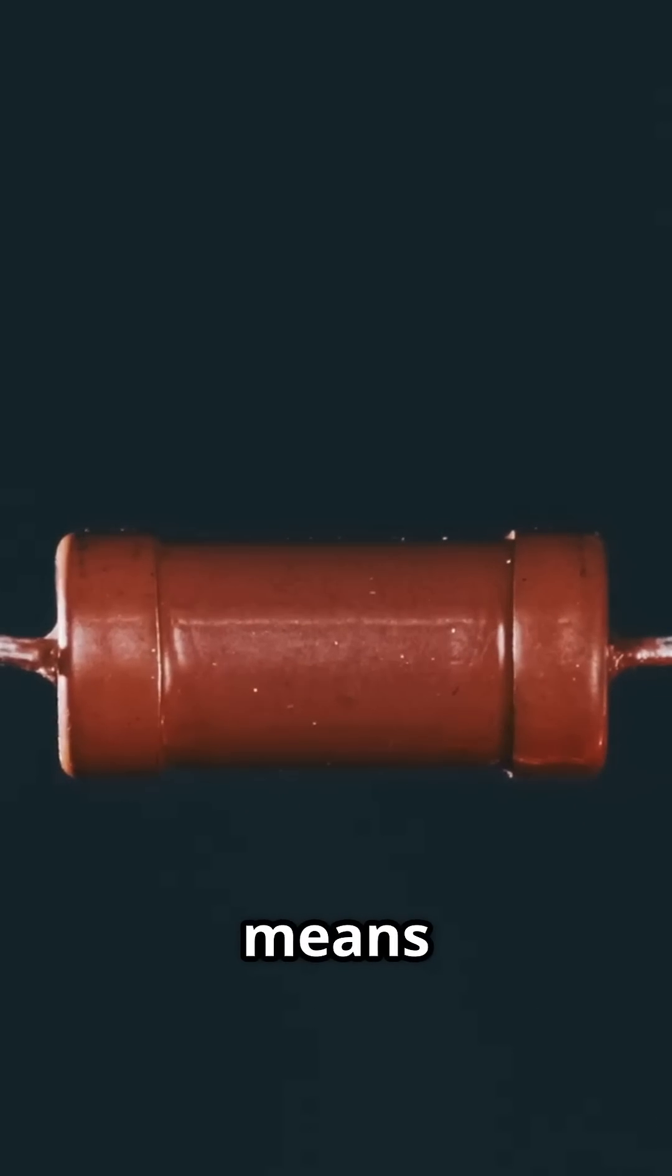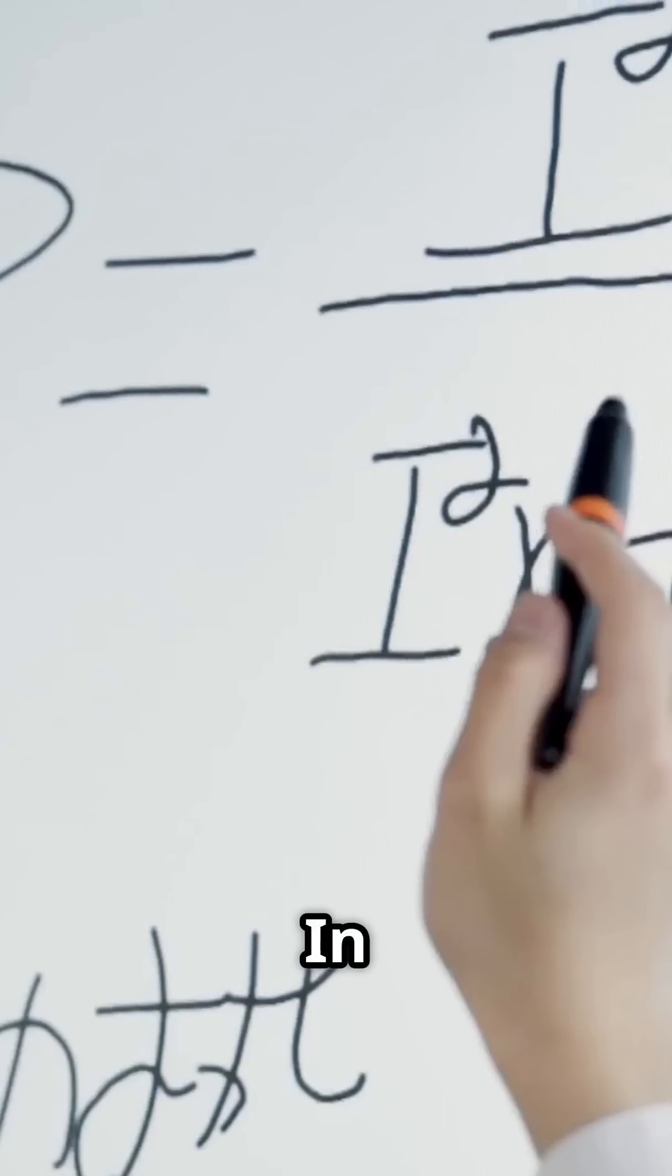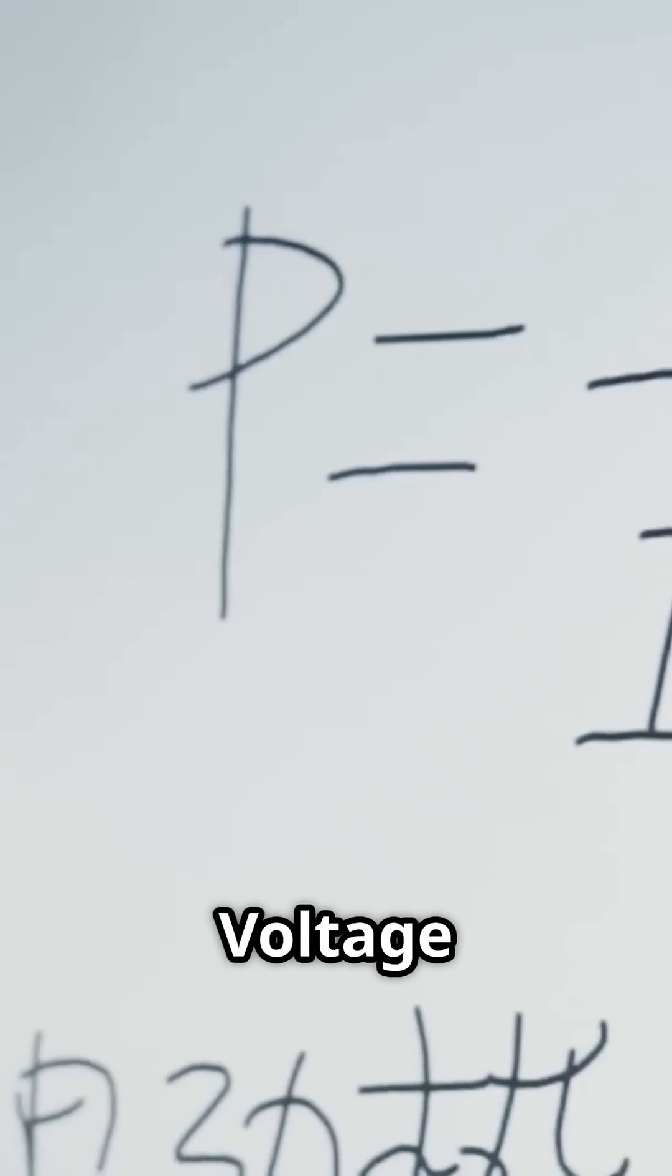Resistance is like the narrowness of the slide. The narrower it is, the harder it is to slide down. So higher resistance means the current slows down. In one easy formula: voltage equals current times resistance, V = I × R.